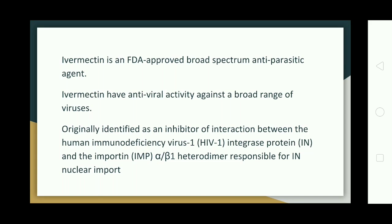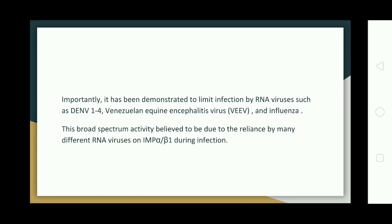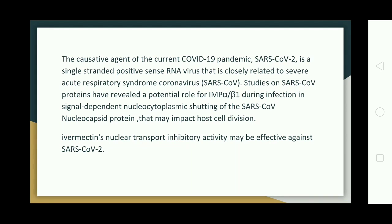Ivermectin has antiviral activity against a broad range of viruses, originally identified as an inhibitor of interaction between the human immunodeficiency virus 1 integrase protein and the IMP alpha/beta 1 heterodimer responsible for integrase protein nuclear import. It has been demonstrated to limit infection by RNA viruses such as DENV 1 to 4, Venezuelan equine encephalitis virus, and influenza.